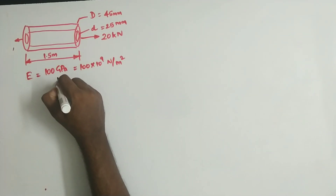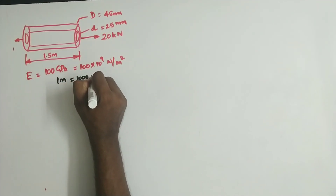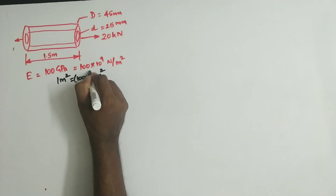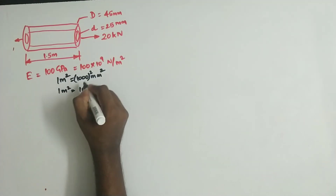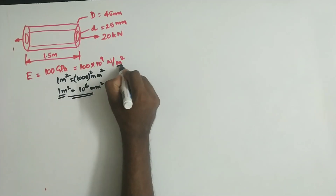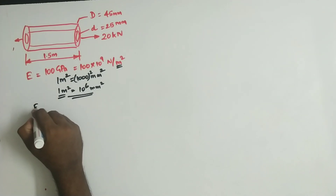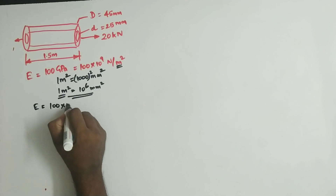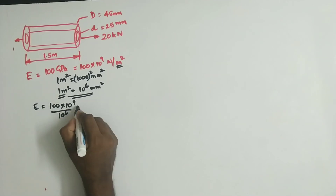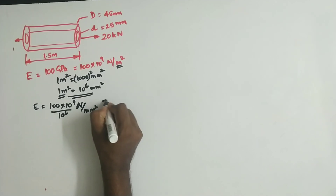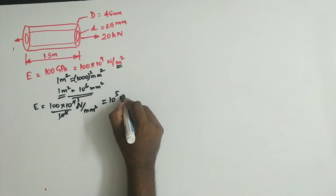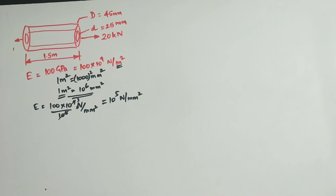We need consistent units, so one meter equals 1000 mm, and one meter squared equals 10 power 6 mm squared. Young's modulus is 100 into 10 power 9 newton per meter squared. Replacing meter squared with 10 power 6 mm squared gives us 10 power 5 newton per mm squared as Young's modulus.